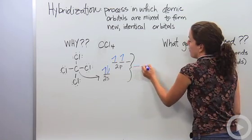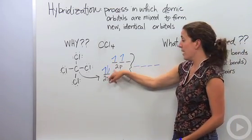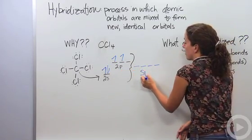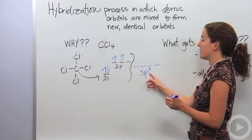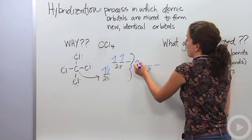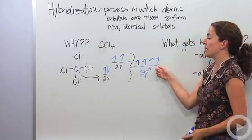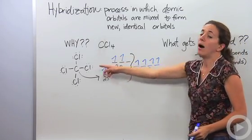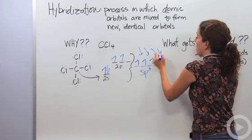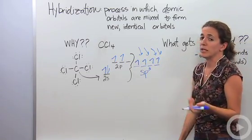We'll have four new orbitals — one from s and three from p — so we call them sp3. We spread these out just as Hund's rule tells us to. We have four electrons, which gives us four equal places for chlorine to come in and bond with that carbon. Chlorine can come in here, here, here, and here, making four of those bonds as you see in the picture.